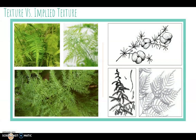Here's a great example: the true texture on this asparagus fern almost looks bumpy and smooth, maybe a little bit soft. But when you look at the images on the right-hand side of the drawn asparagus ferns, you'll see that they used different strokes and different drawing techniques to create an implied texture. Even though we know this is a drawing, it still looks like you can feel it.